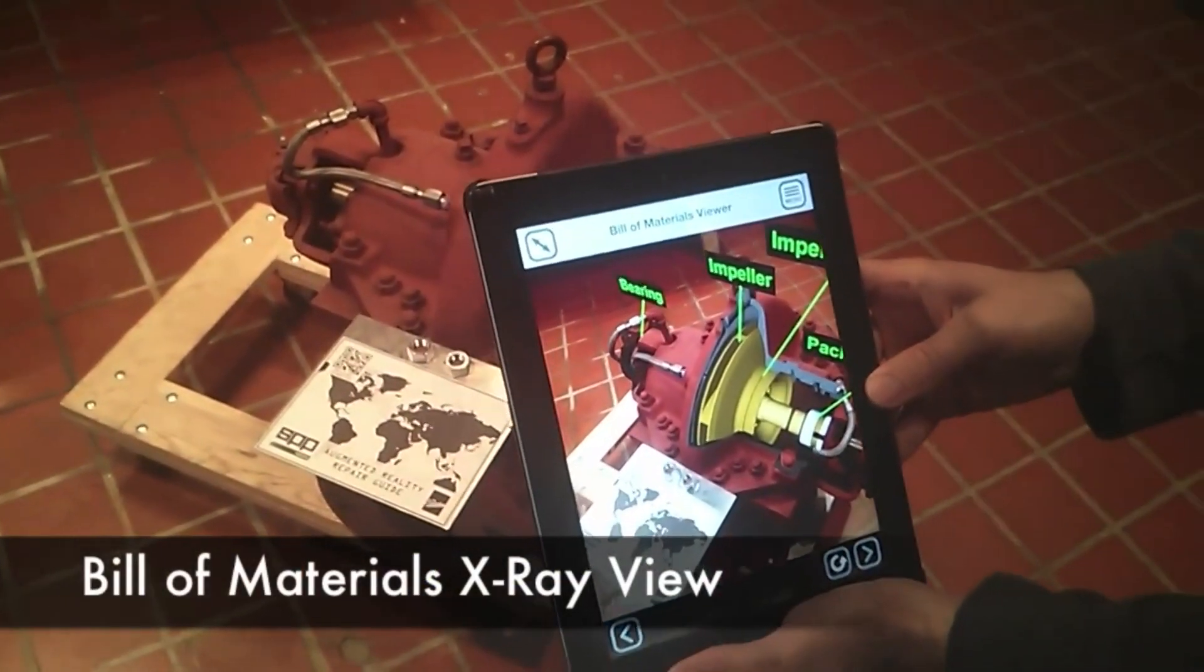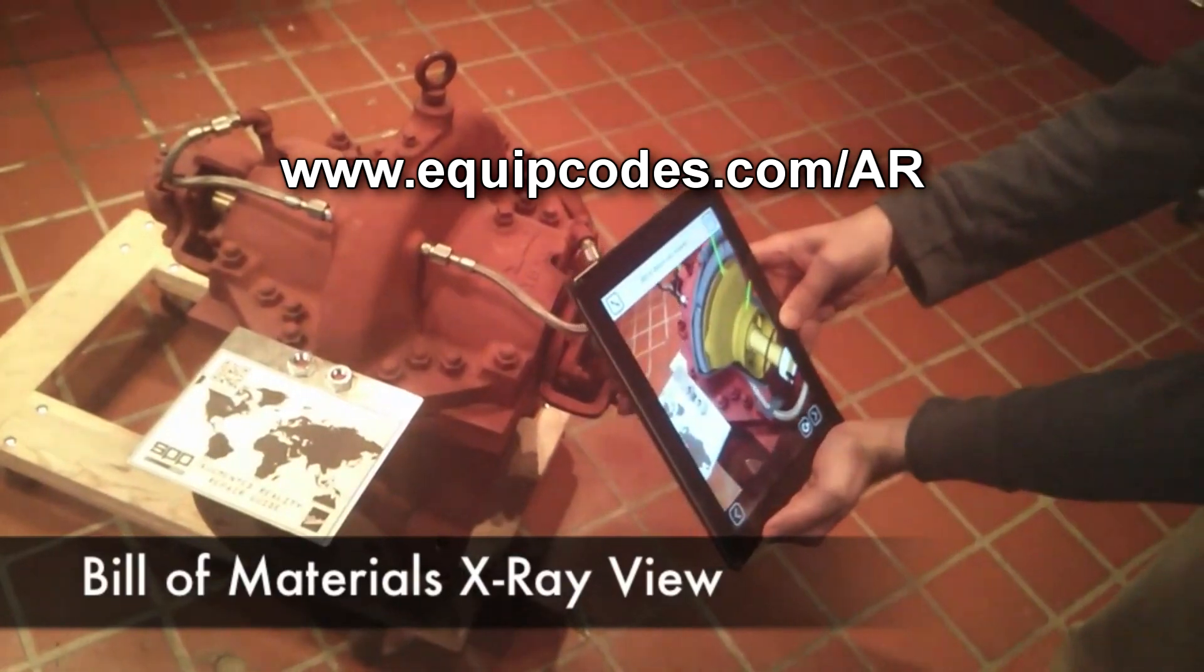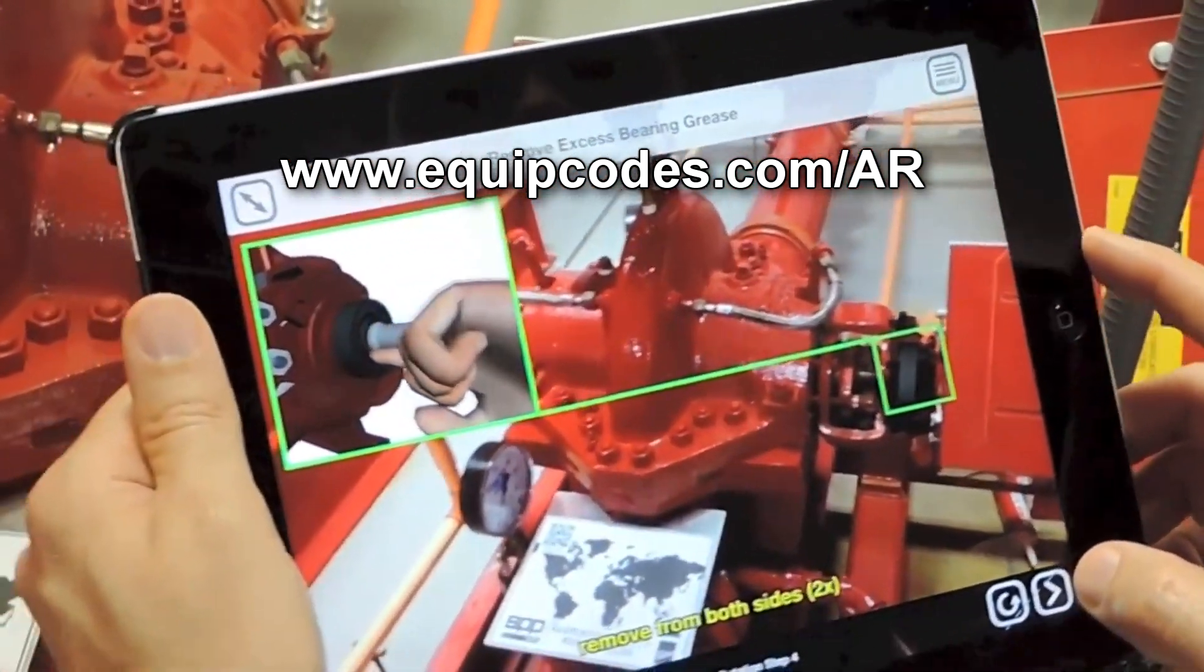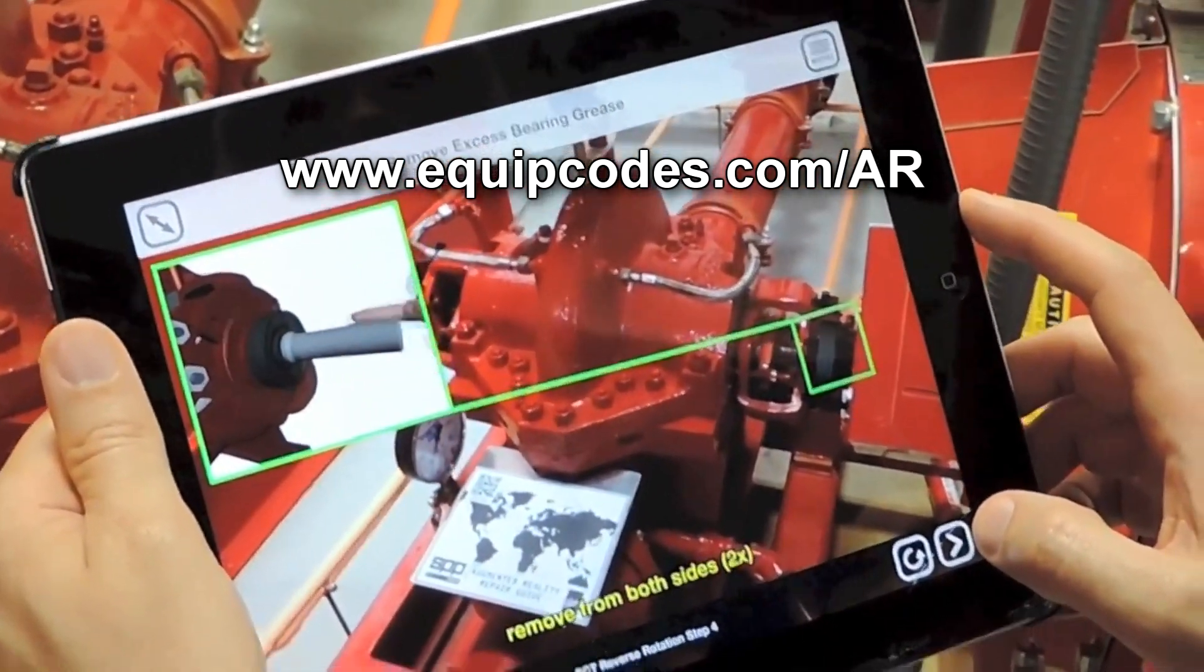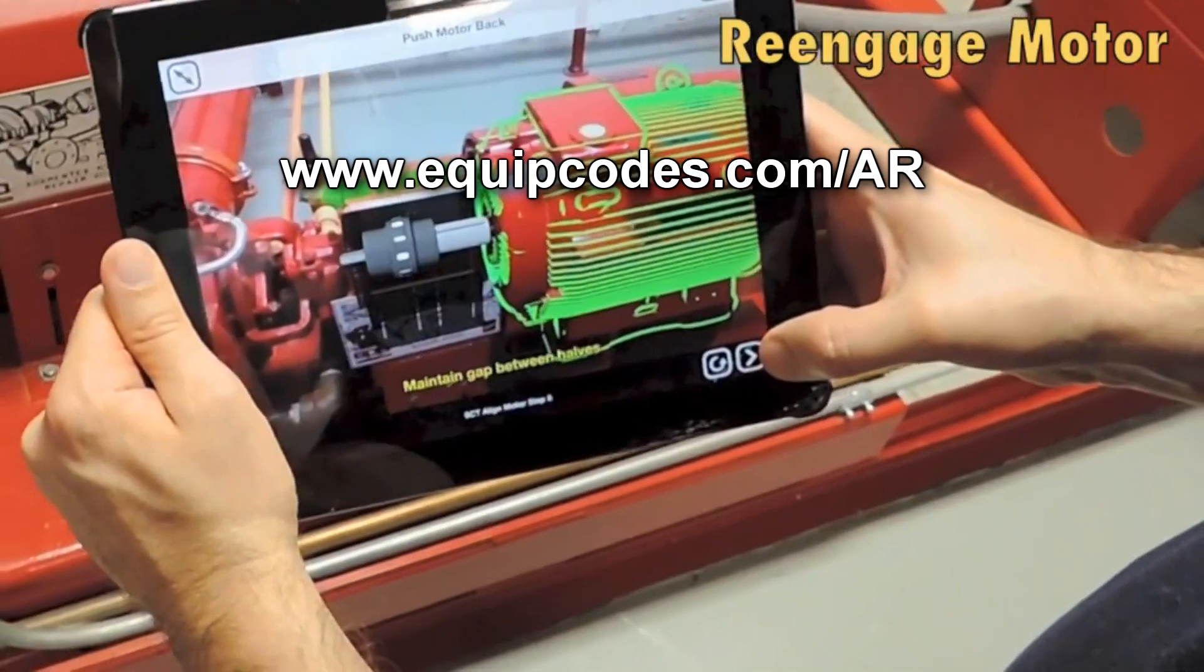This prototype is made by a company called Equipcodes and they make augmented reality guides for larger industrial equipment also. Here's a few clips from some of their video demos. You can find out more information about this app at equipcodes.com/AR.